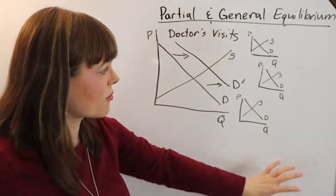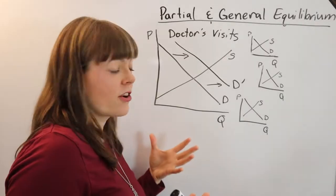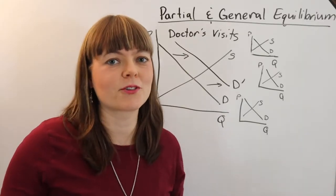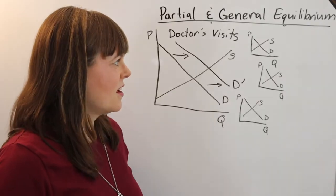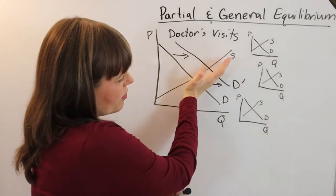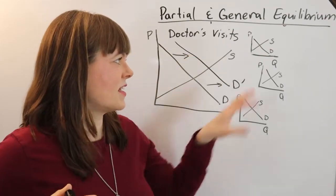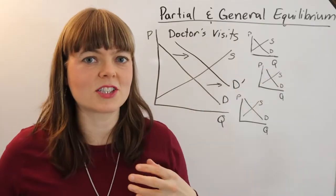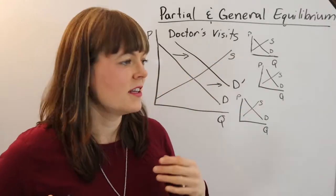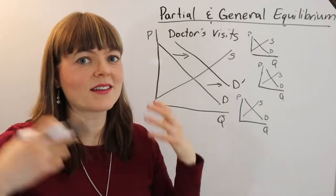In the long run, you're going to have more doctor services available. More innovators will come up with products to sell to this newly insured market of people over 65 who have good insurance. You'll have an expansion in the number of hospitals, so the supply may actually shift out for doctor services. But it's not just doctor visits—it's hospital visits, medical technologies, innovative new products that come on the scene in response to this demand shift. There's a whole bunch of adjustments that will happen in the long run, and that's how you get to general equilibrium.